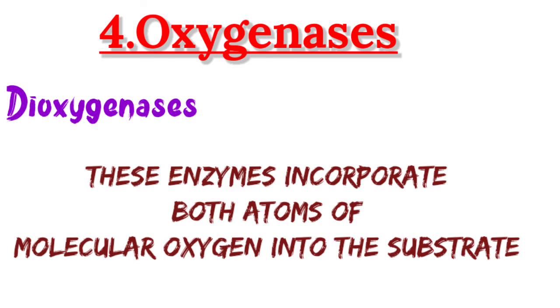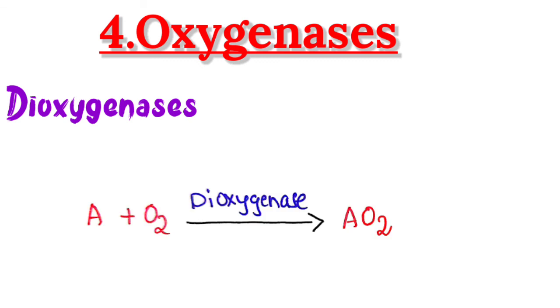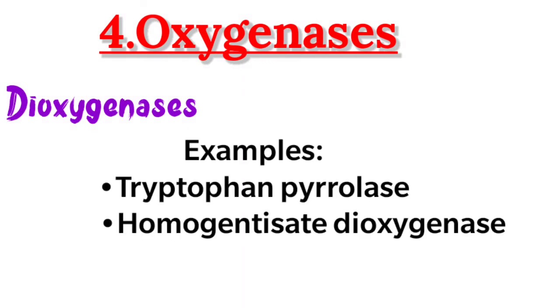Coming to the second class, dioxygenases: the name indicates 'di' meaning 2. These enzymes incorporate both atoms of molecular oxygen into the substrate molecule. In the general reaction, A + O₂ — dioxygenase transfers two oxygen atoms to the substrate, converting it into AO₂. Examples of dioxygenases include tryptophan pyrrolase and homogentisate dioxygenase.